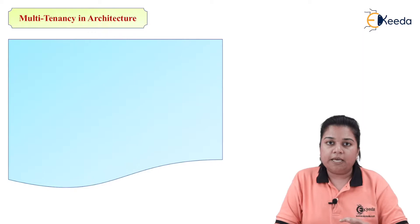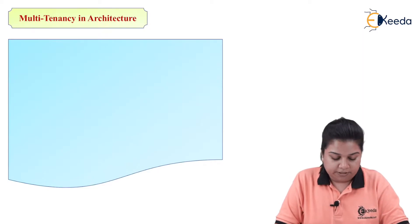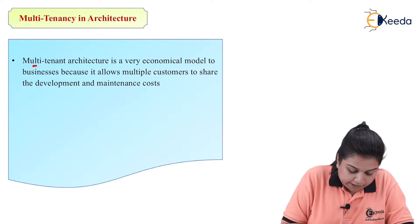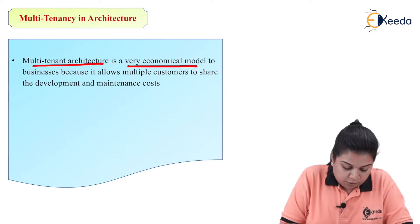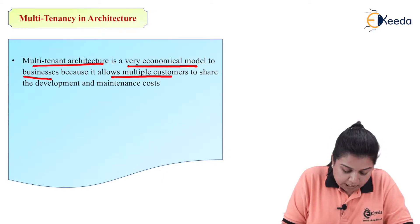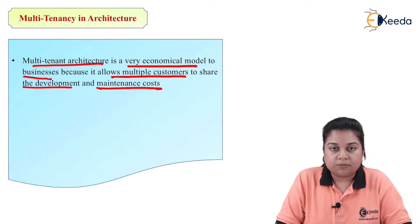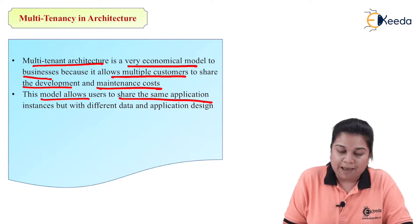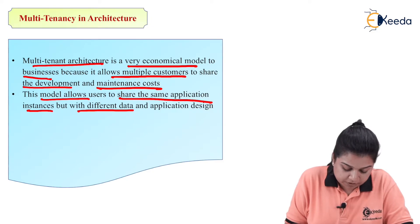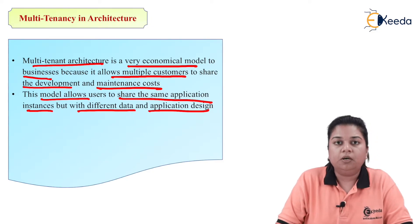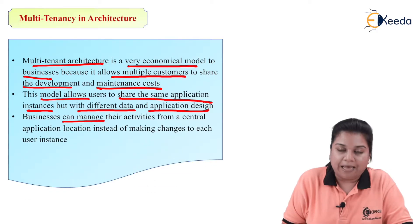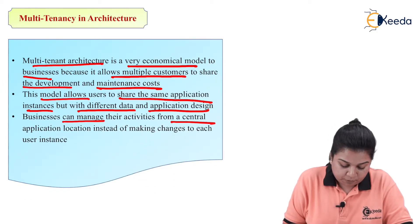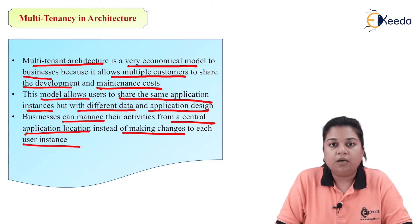The first characteristic is multi-tenancy architecture. Multi-tenant architecture is a very economical model for businesses because it allows multiple customers to share the development and maintenance costs. This model allows users to share the same application instances but with different data and application design. Businesses can manage their activities from a central application location instead of making changes to each user instance.